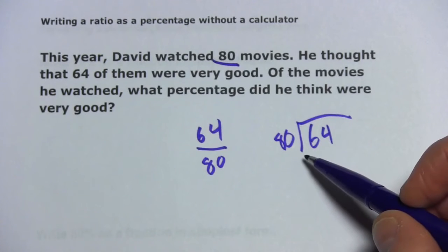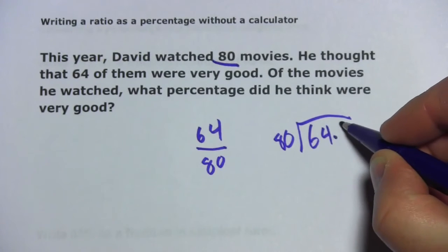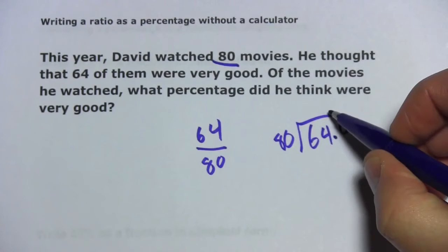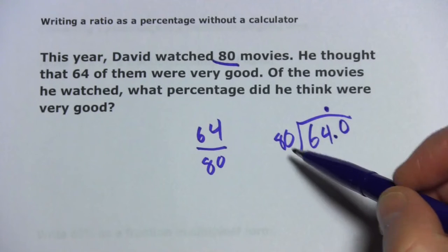So how do I divide 64 by 80? Clearly, 80 is bigger than 64. So what I'm going to do is put a decimal point here, add a zero, and then put my decimal point up here. Now, let's see.